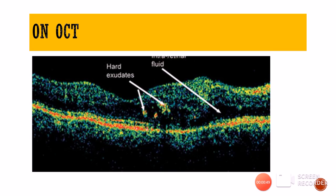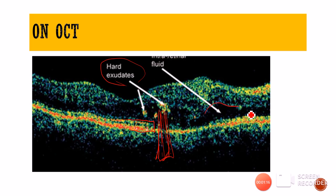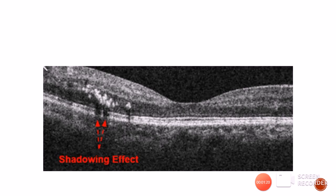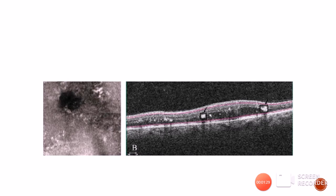On OCT, hard exudates in the outer plexiform layer absorb light and produce a shadowing effect. Layers of the retina are visible in unaffected areas, but behind hard exudates the layers cannot be seen due to shadowing. Hard exudates are also associated with surrounding fluid, appearing as hypo-reflective areas on OCT. The clumps of hard exudates show these characteristic hypo-reflective shadow bands behind them.